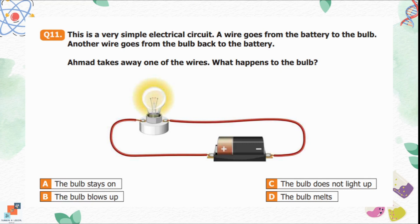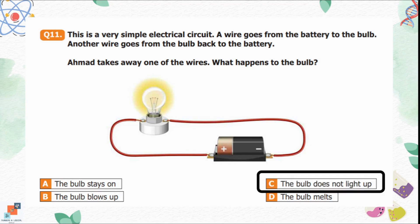Question number 11: In a simple electrical circuit, a wire goes from the battery to the bulb and another wire goes back from the bulb to the battery. Emeth takes away one of the wires. What happens to the bulb? Option A is the bulb stays on. Option B is the bulb blows up. Option C is the bulb does not light up. Option D is the bulb melts. Options B and D are incorrect — the bulb cannot blow up or melt, as this is not a short circuit. It is an incomplete circuit because the wire is missing, so electricity cannot flow. Option C is correct: the bulb does not light up due to the open circuit.